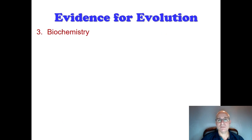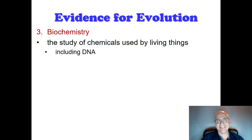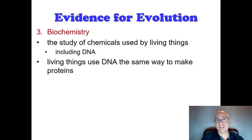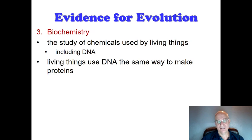The third evidence for evolution is biochemistry. As the name implies, this is the study of the chemicals used by living things. In biochemistry, when used for evolution, we're looking at DNA and proteins. DNA is the molecule inside our cells that stores the instructions for making whole new cells and organisms. The fact that living things on Earth use DNA almost exactly the same way to make proteins — a very complex process — is pretty amazing. The likelihood that organisms would have evolved the exact same mechanism for doing this independently of one another isn't very likely.